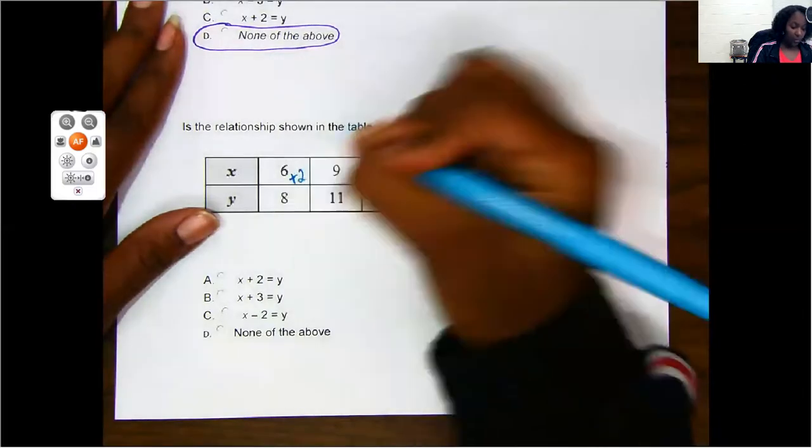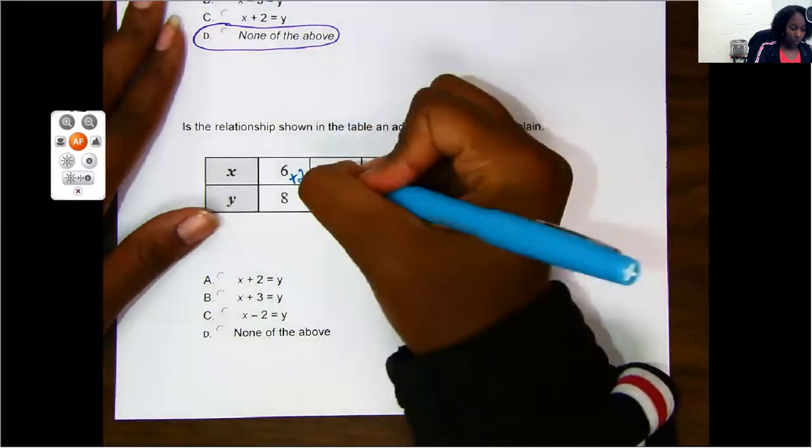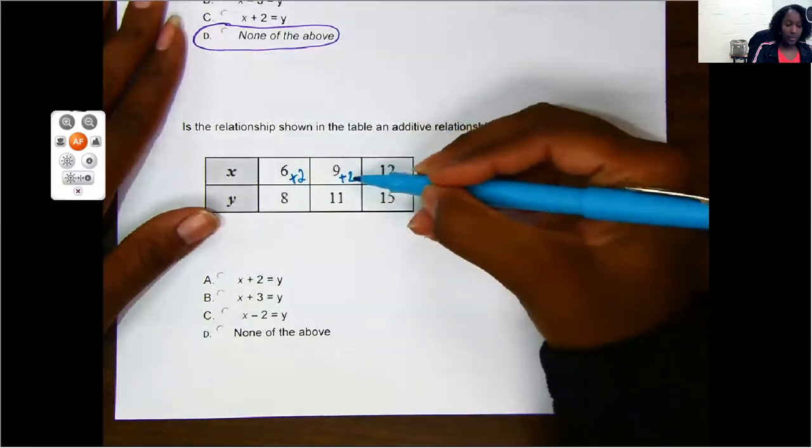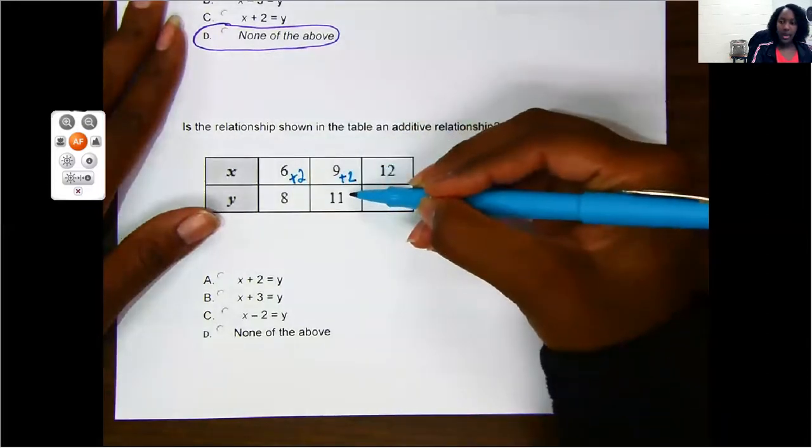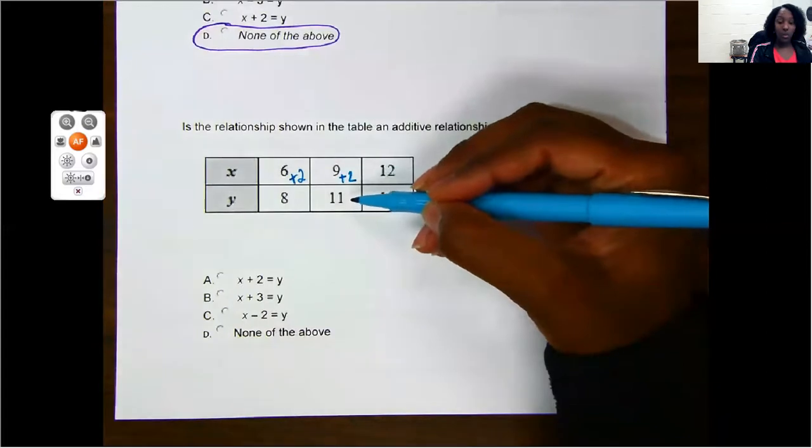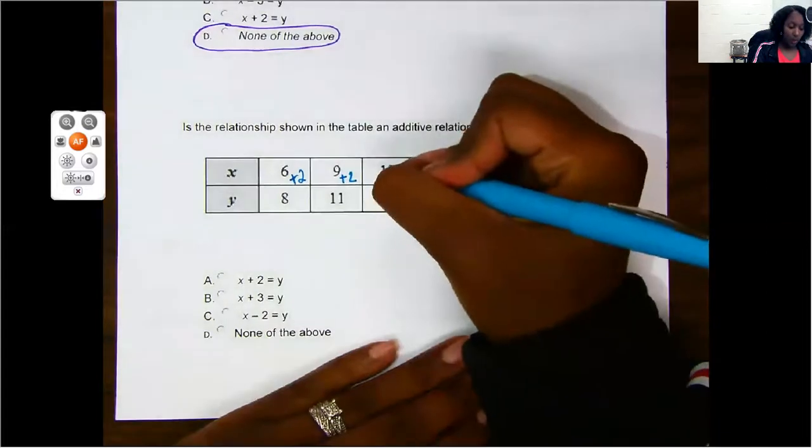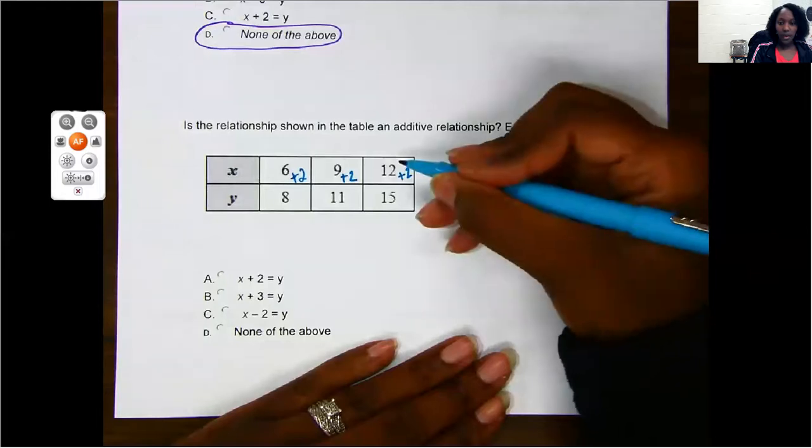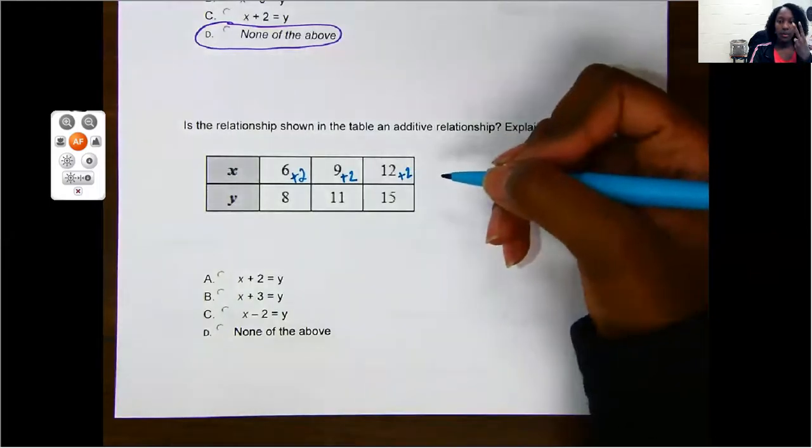If you said 2, I agree with you. Let's see if it works for the other ones. Is 9 plus 2, 11? 9, 10, 11. That works out. Is 12 plus 2, 15? 12, 13, 14. Oh, that one didn't work either, okay? It looked like it was going to be plus 2, but that didn't work out.